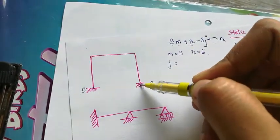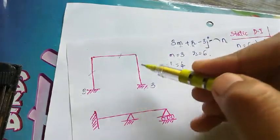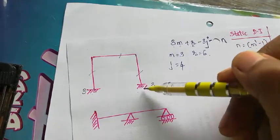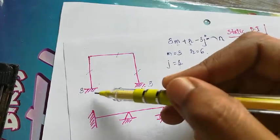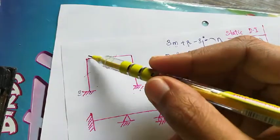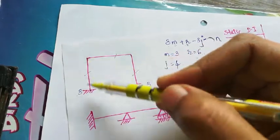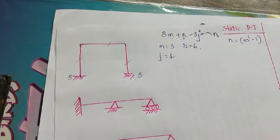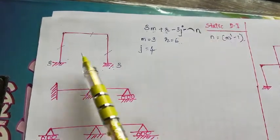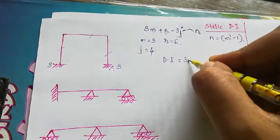Next, joints: joints 1, 2, 3, and 4, so j = 4. Each fixed support gives three reactions, two fixed supports gives 3 + 3 = 6. A joint is where two elements meet. Since there is no internal hinge provided, n = 0.